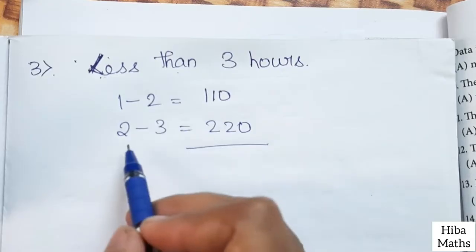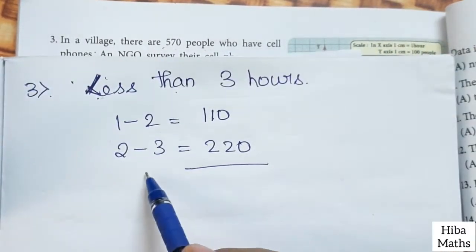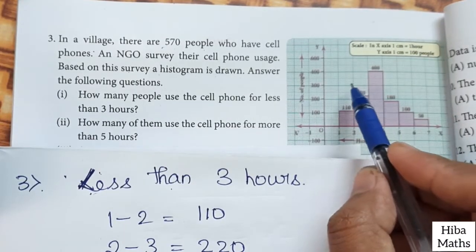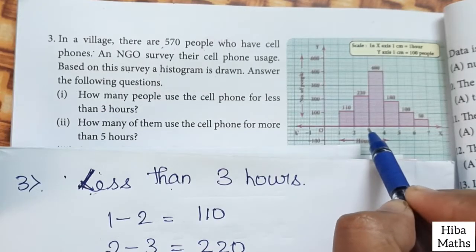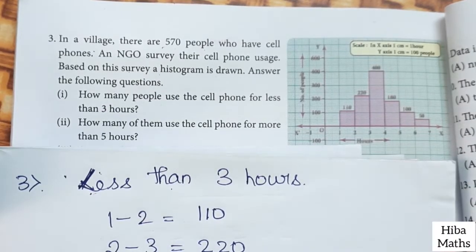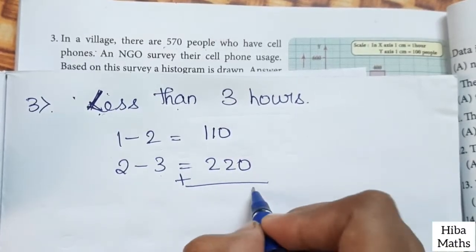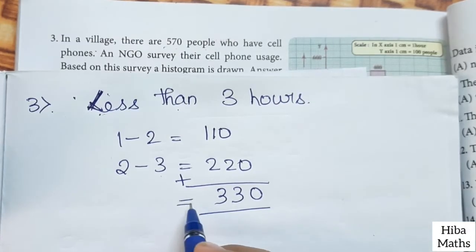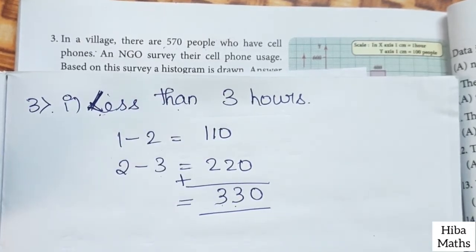1 hour to 2 hours is 110. In this graph you can see 110. That means it is from 1 to 2 hours. It is less than 3 hours. So total is 110 plus 220 equals 330 people use cell phones for less than 3 hours. That is the answer to the first question.